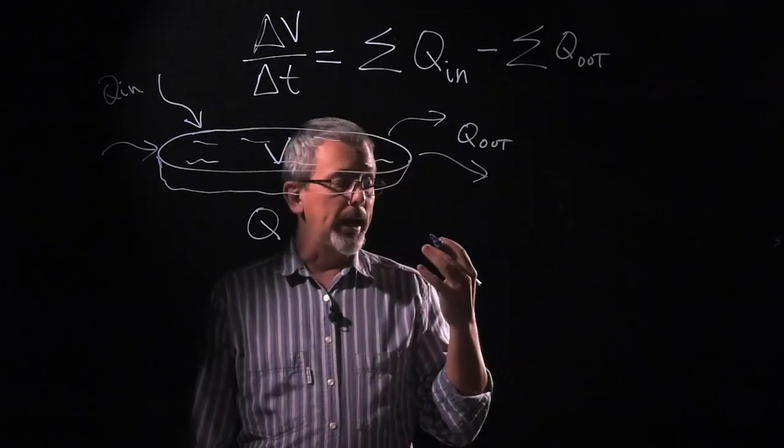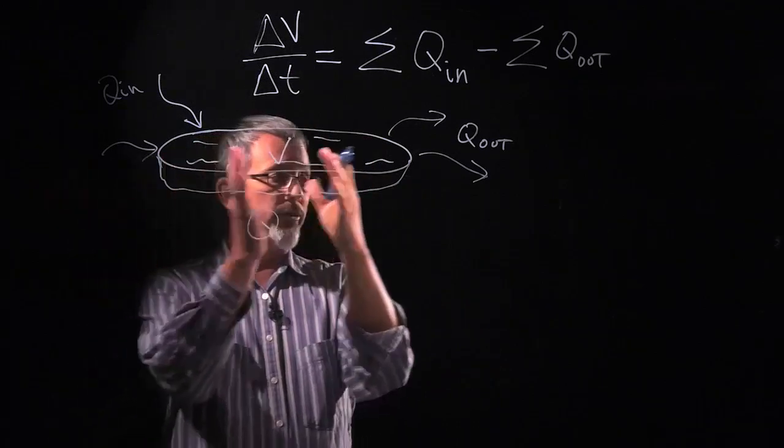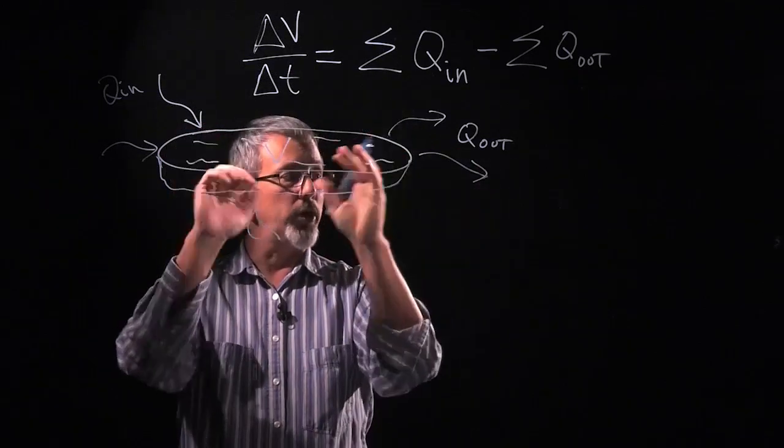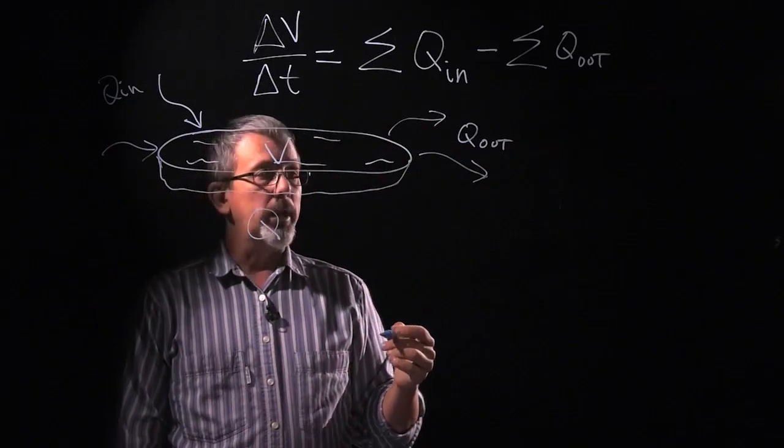So for Eulerian flow, when we're thinking about Eulerian flow here, something coming in and something going out and we're staying with the volume but not worrying about the things that are flowing in and flowing out after they leave our area.